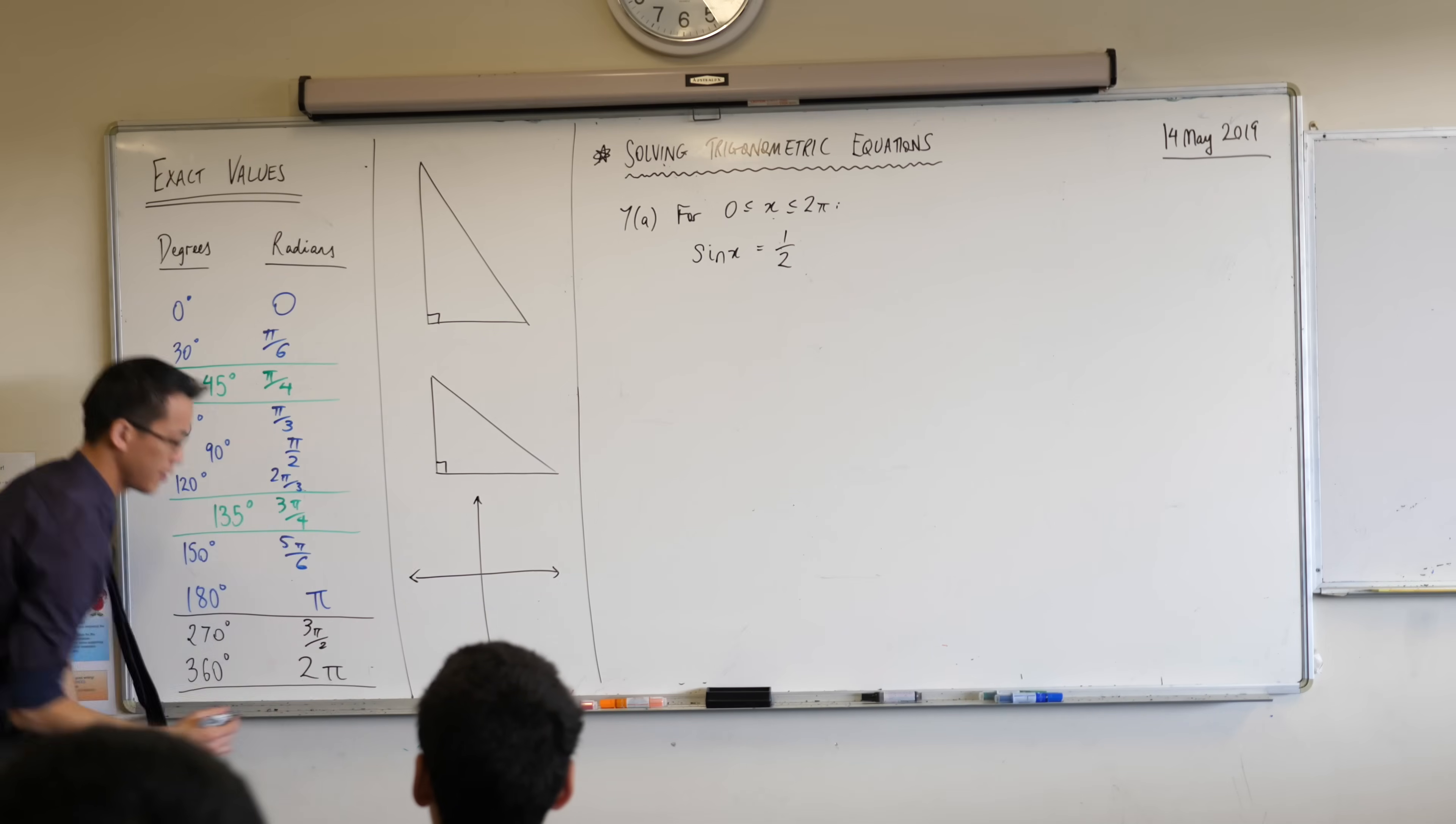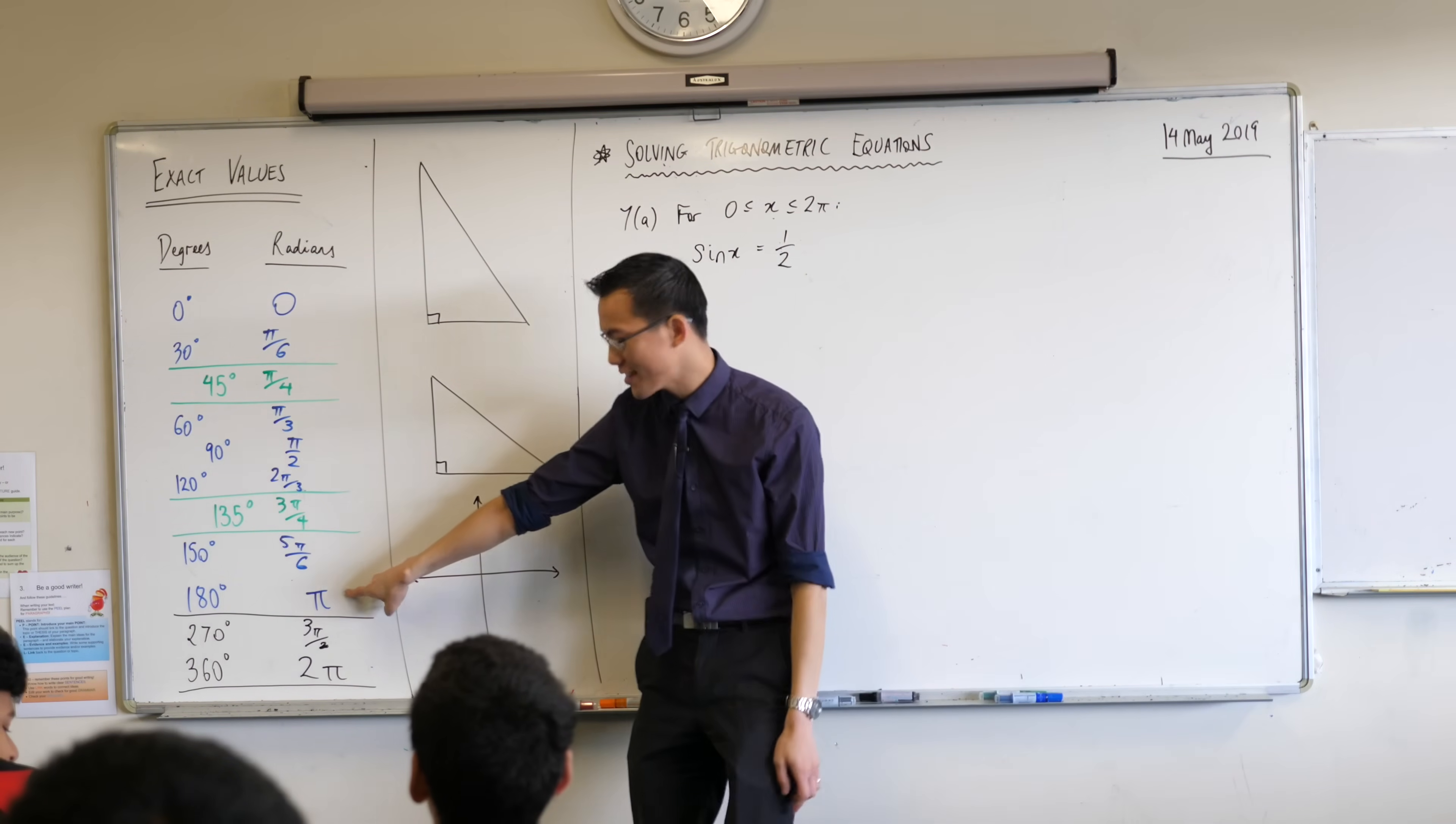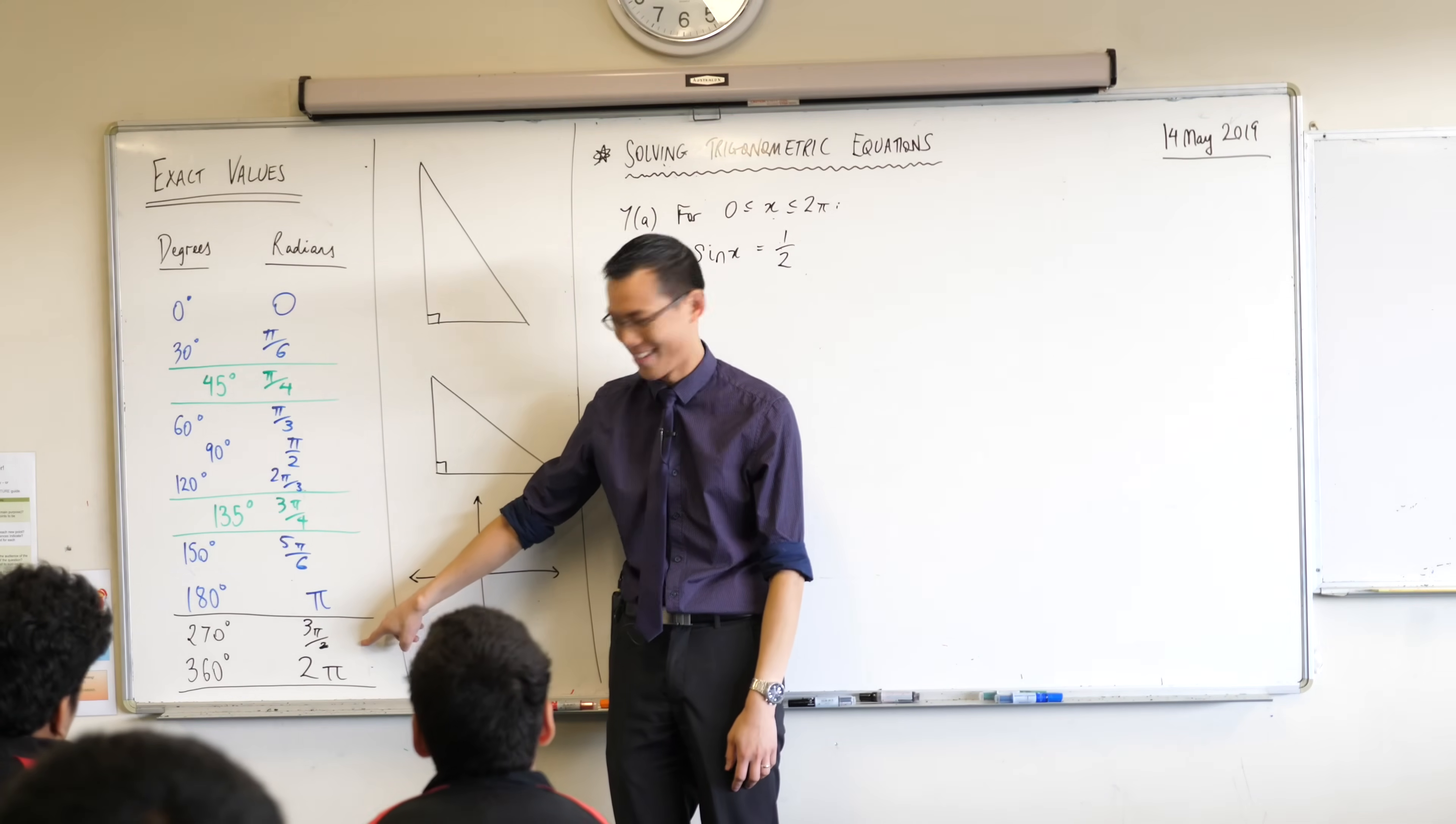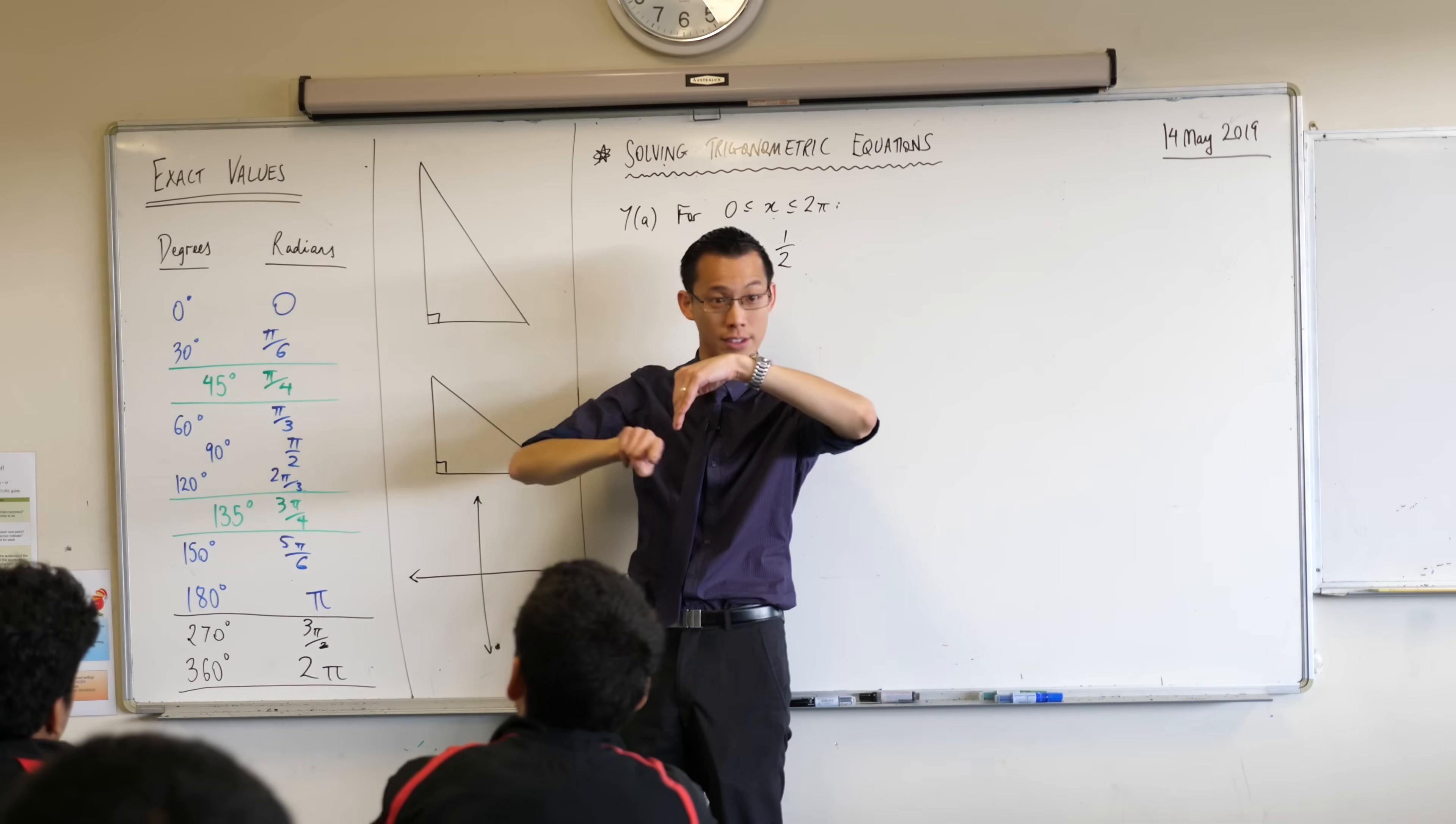So basically when you're in radians you're just going to think of everything in terms of π's. If this is a straight angle, if you want something less than a straight angle you're going to have less than a π. And if you've got something more than a straight angle you're going to have more than a π right? So 3π/2 that's going to be a reflex angle. 3π/2, 270 degrees.